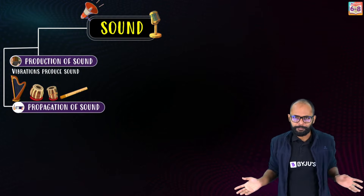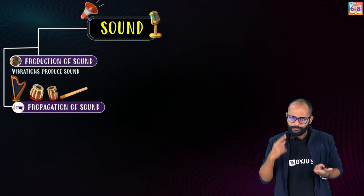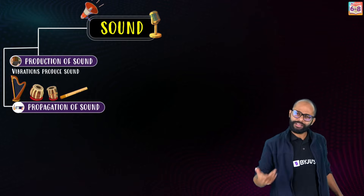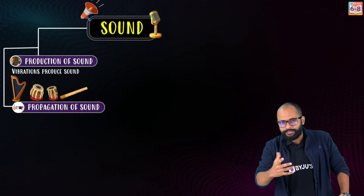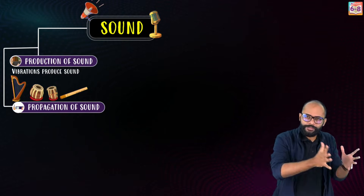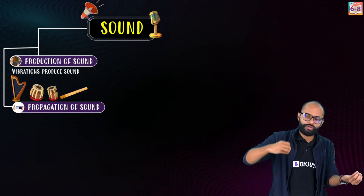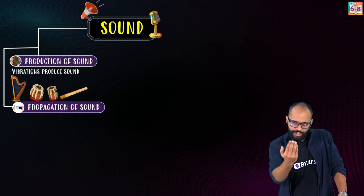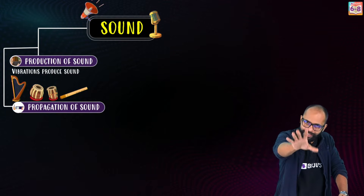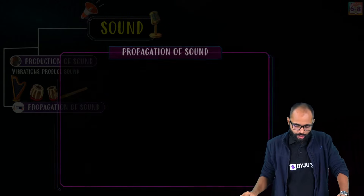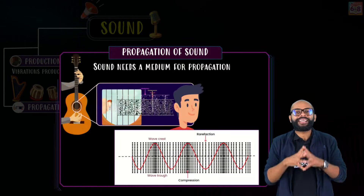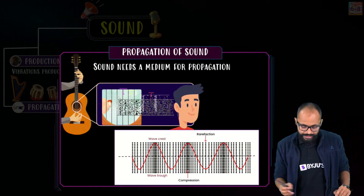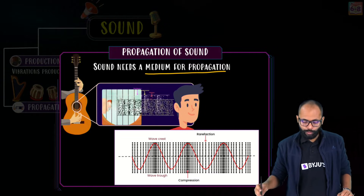Sound is produced here and you hear it over there — in between there is air, there is a medium. So how does sound propagate? Propagation means travelling of sound — how sound travels from the source to the listener. Sound is a mechanical wave, which means it needs a medium for propagation.